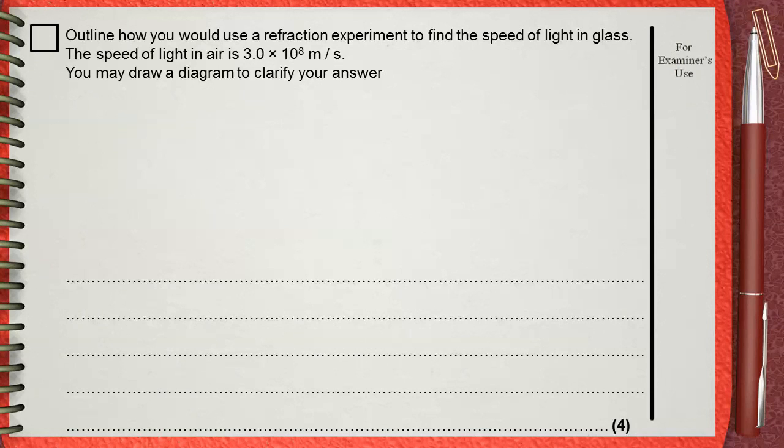Outline how you would use a refraction experiment to find the speed of light in glass. The speed of light in air is 3.0 × 10⁸ meters per second. You may draw a diagram to clarify your answer.